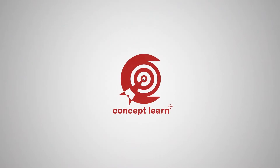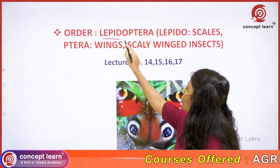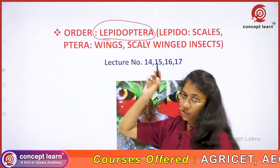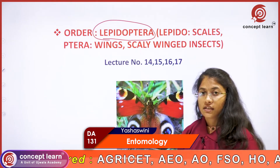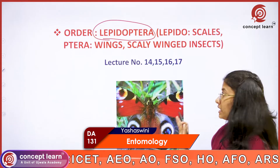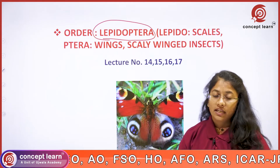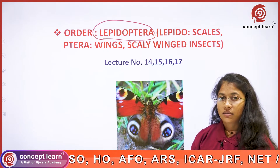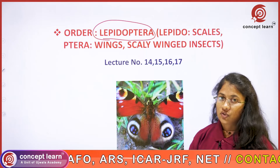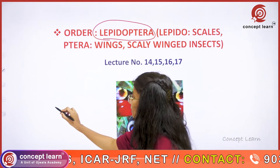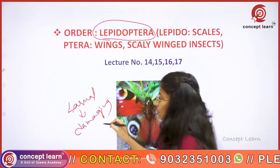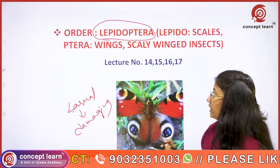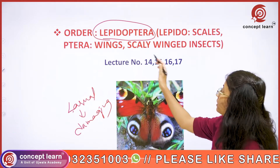Welcome to Concept Learn. The first important order is that of the Lepidoptera. This is considered the most important order because the caterpillar stage is usually found damaging most of the crop plants. The larval stage causes huge losses to crops.